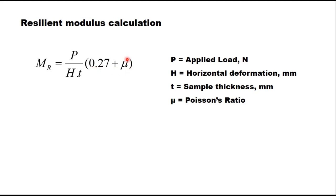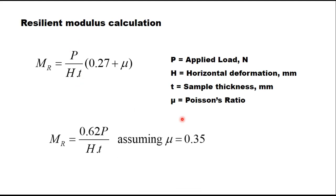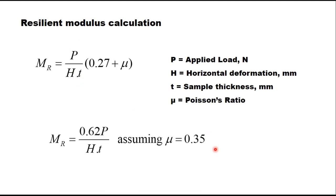Here, mu is the Poisson ratio, H is the horizontal deformation in millimeters, P is the applied load, and t is the sample thickness. Assuming mu = 0.35, this equation transforms to: MR = 0.62 × P / (H × T).